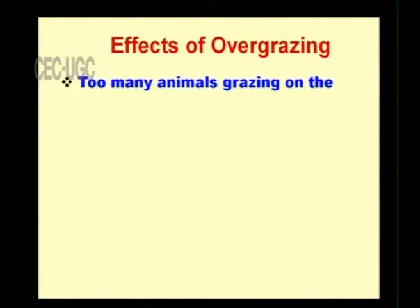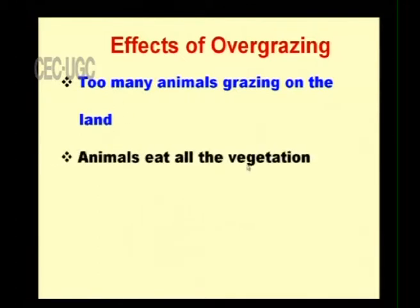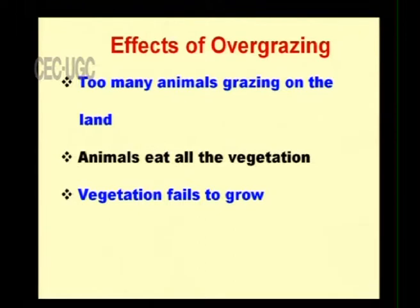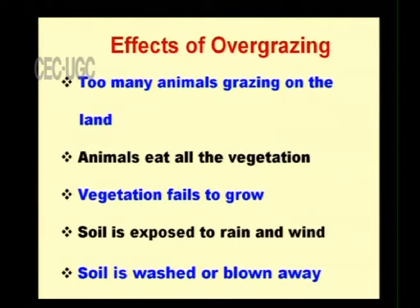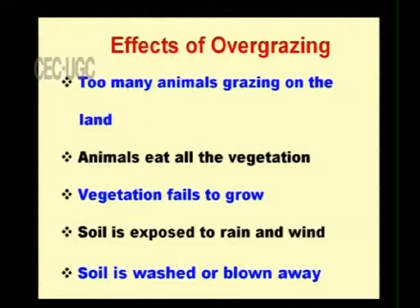The effect of over grazing: when too many animals are grazing, they eat all the vegetation and the vegetation fails to grow, because the grass cannot be replenished fast enough. The soil is then exposed to rain and wind, and the soil is washed or blown away. When vegetation is present, roots and stems protect the soil; without them, erosion happens from both water and wind, and the top soil is taken away.